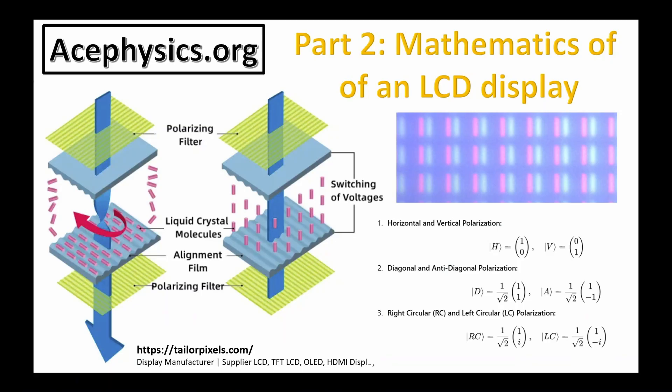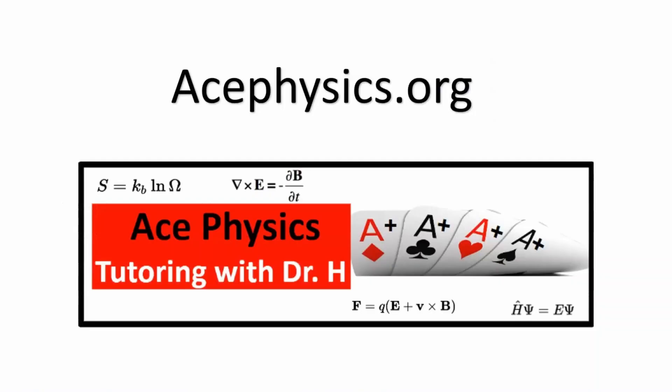Stay tuned for part two, where we explore the mathematics behind how liquid crystals alter the polarization state of light, using the same formalism as two-state quantum systems. We'll also break down the final three key concepts from the table. These ideas reveal deep connections between optics and quantum mechanics. Don't miss it. Physics is about to get even more fascinating. AcePhysics.org, math and physics tutoring with Dr. Hudis.